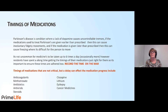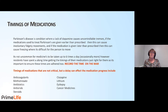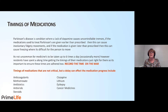Timings of medications: as discussed in other sessions, it's important that medication is given on time and every time. Parkinson's disease is a condition where a lack of dopamine causes uncontrollable tremors. If the medications used to treat Parkinson's are given earlier than prescribed, this can cause involuntary fidgety movements. If the medication is given later than prescribed, this can cause freezing, where it's difficult for the person to move. It's not uncommon for this type of medication to be taken up to six times a day, or more.